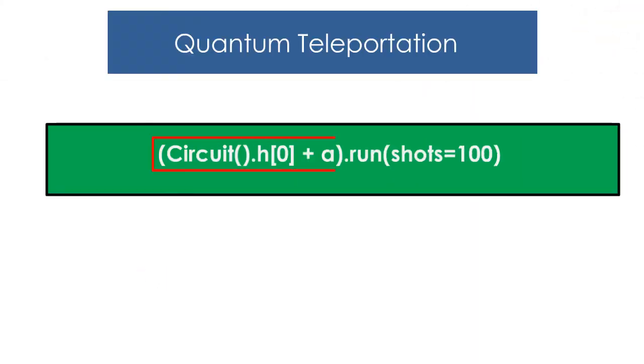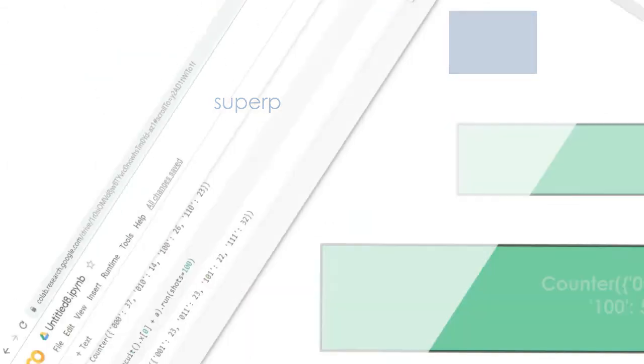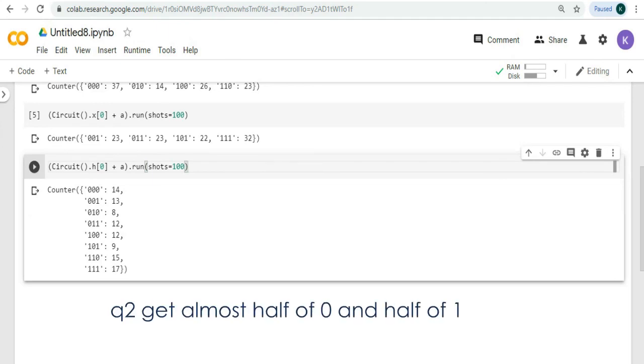Finally, we will apply H gate to q0 so that we can try on superposition of 0 and 1. When we run this on Google Colab, we will get this output. Let's try it. Run this. We can see that q2 gets almost half of 0 and half of 1.